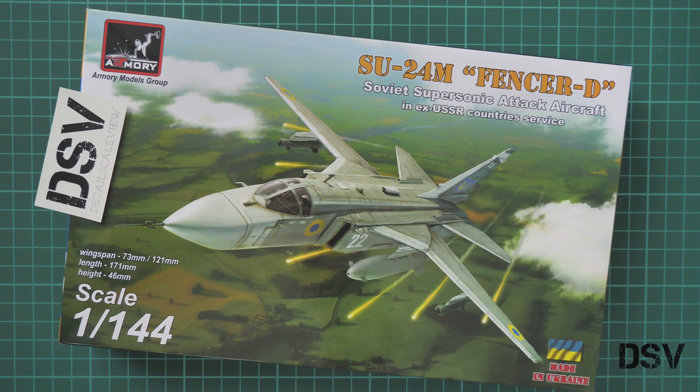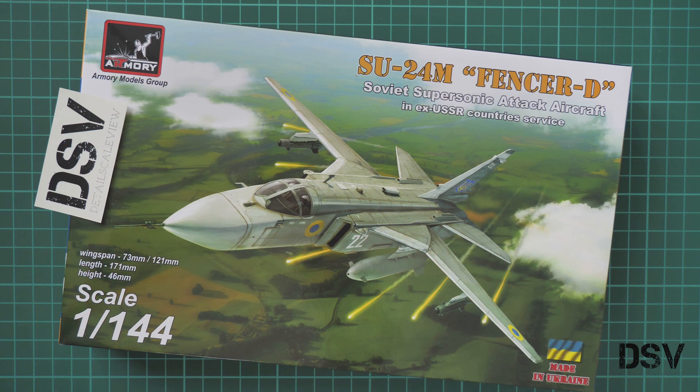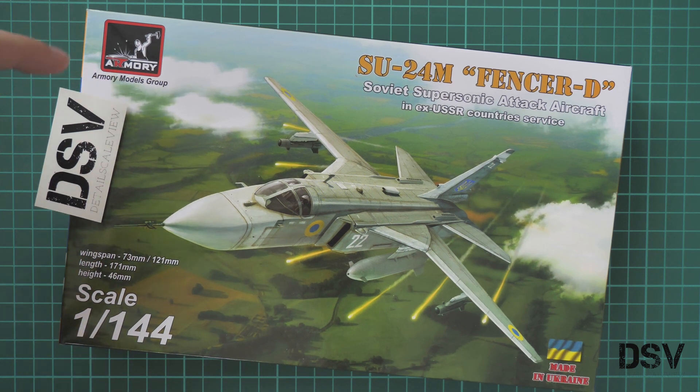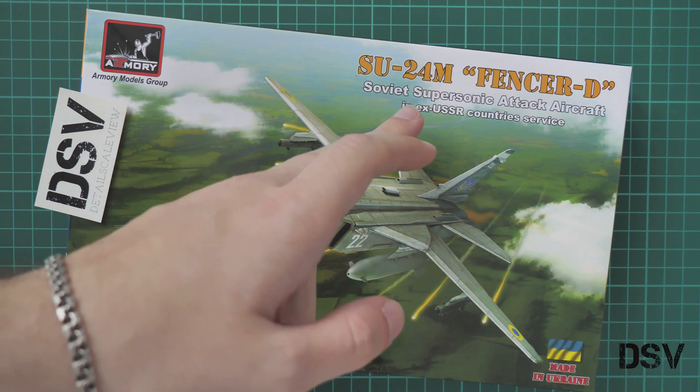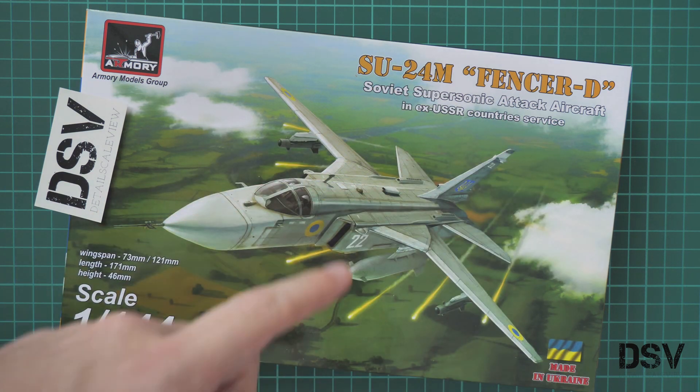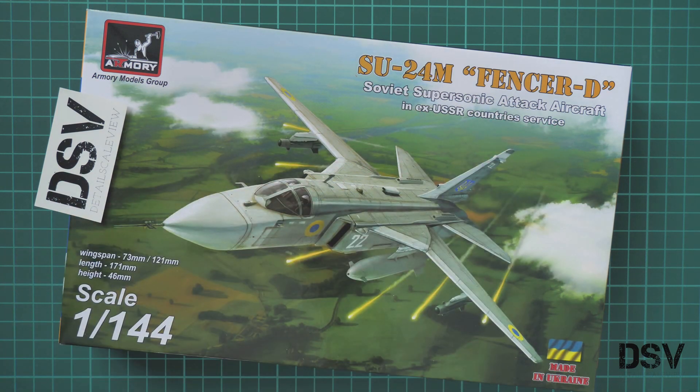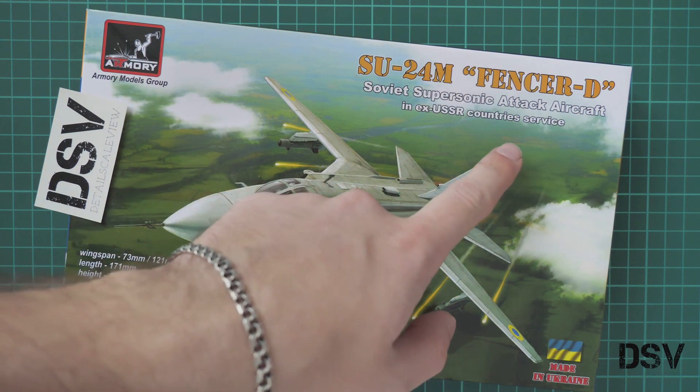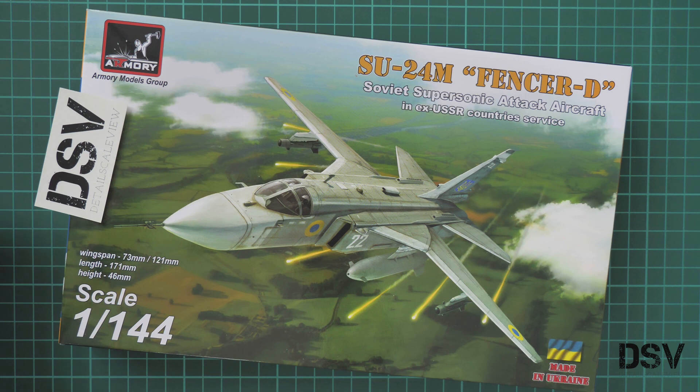Hello everyone, today we have a new video review. As you can see, this time we are going to check a small scale aircraft. To be precise, it's a 1/144 scale aircraft kit which comes from Armory Models Group. It's a Su-24M Fencer D Soviet supersonic attack aircraft with marking options in ex-USSR country service.